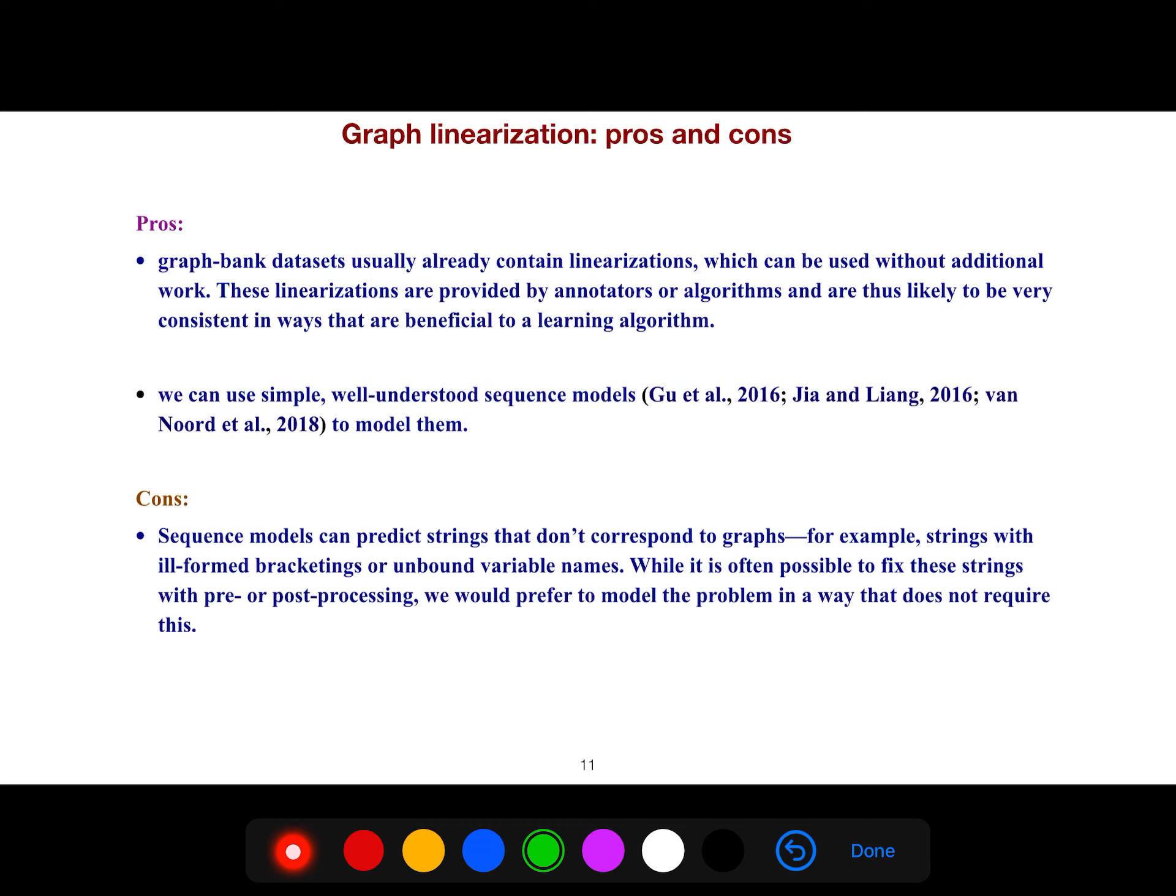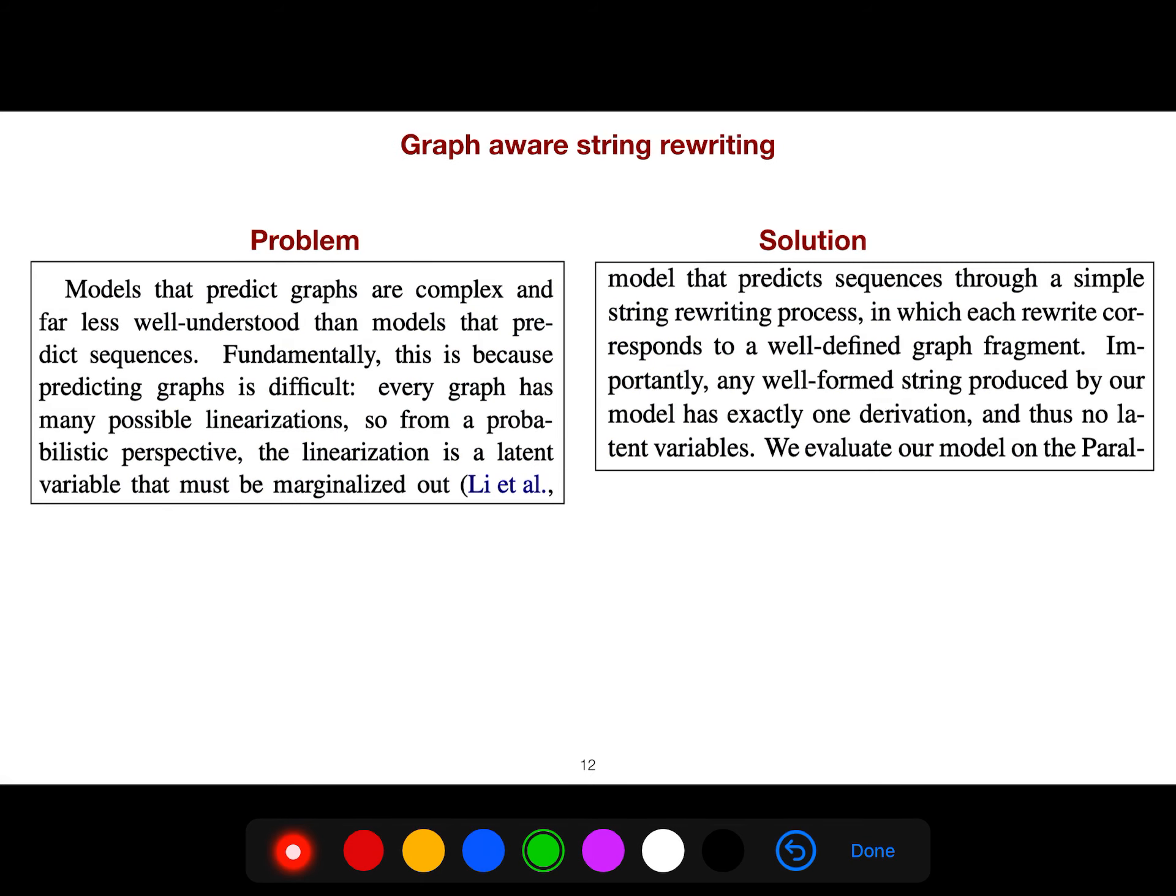There are pros and cons for linearization, graph linearization that is very common in parsing literature. Graph bank datasets usually already contain linearizations which can be used without additional work. We can use simple, well-understood sequence models to model them. But the problem is sequence models can predict strings that don't correspond to graphs.